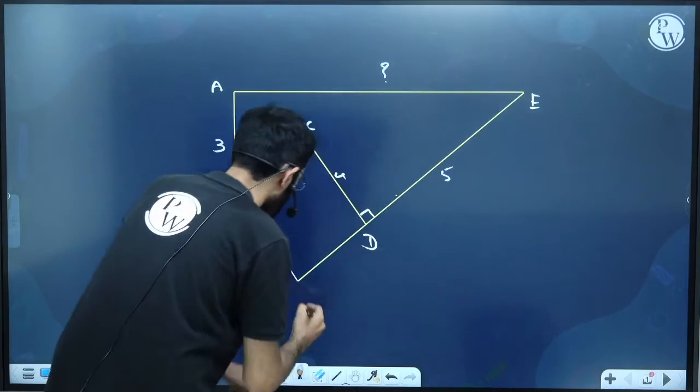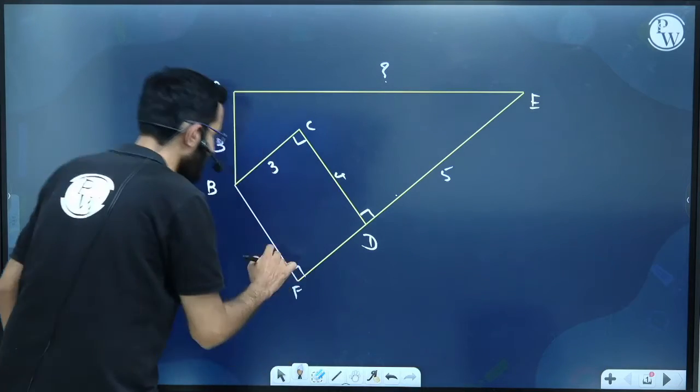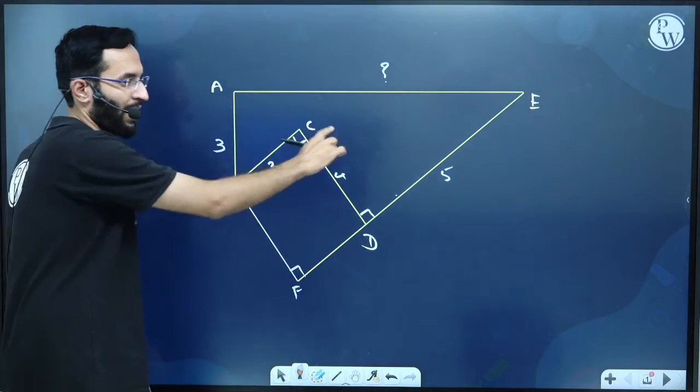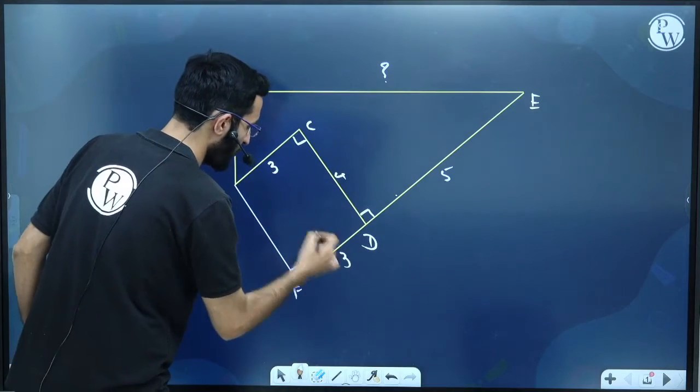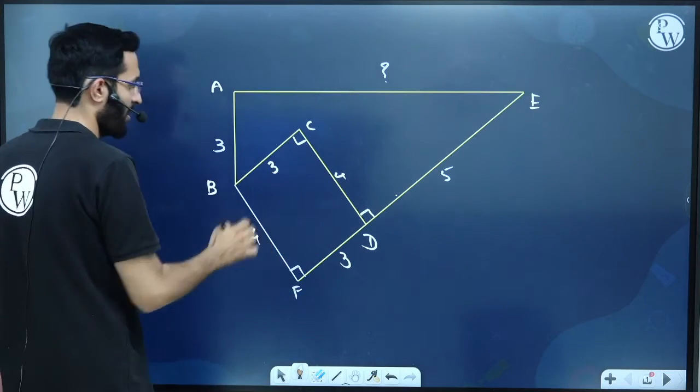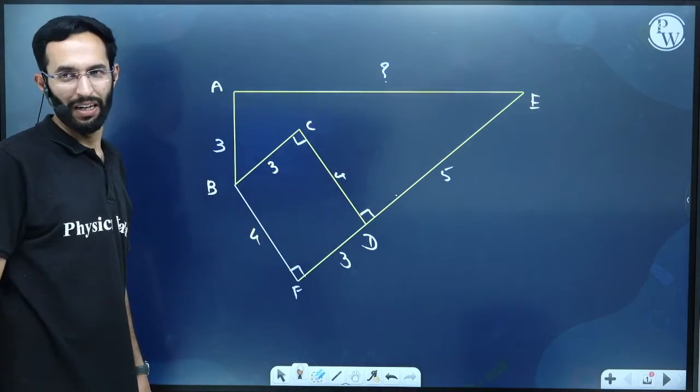Can I say this is becoming a rectangle or not? If this is becoming a rectangle, then can I say the opposite sides are same in nature? This is 3, 3, 4, 4 because of rectangle.